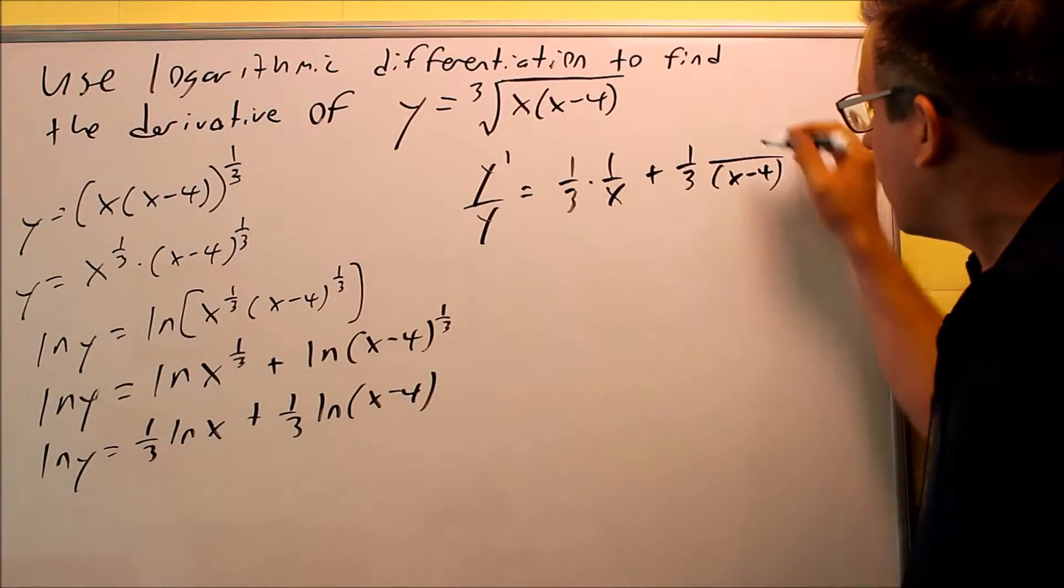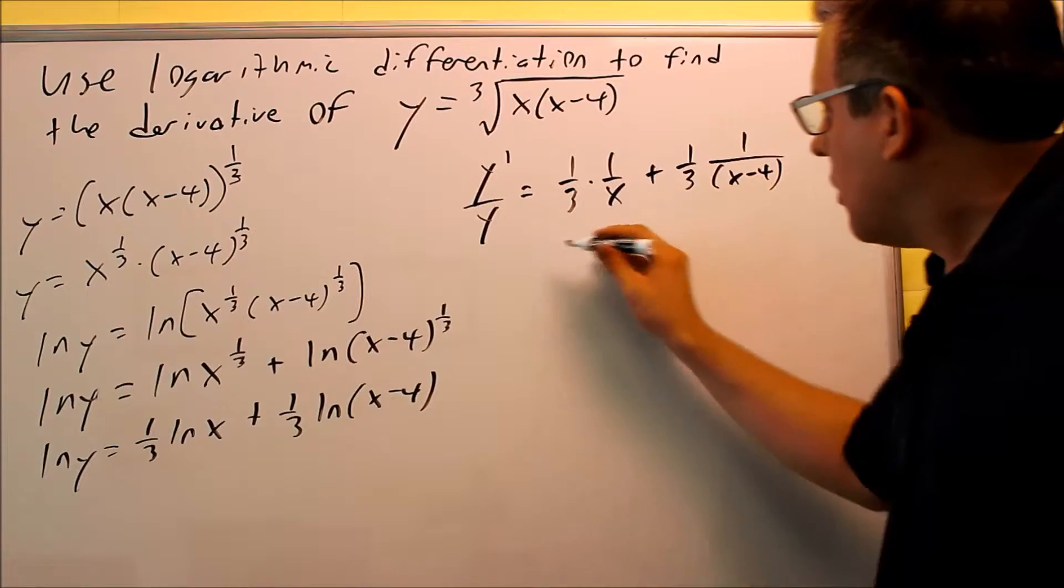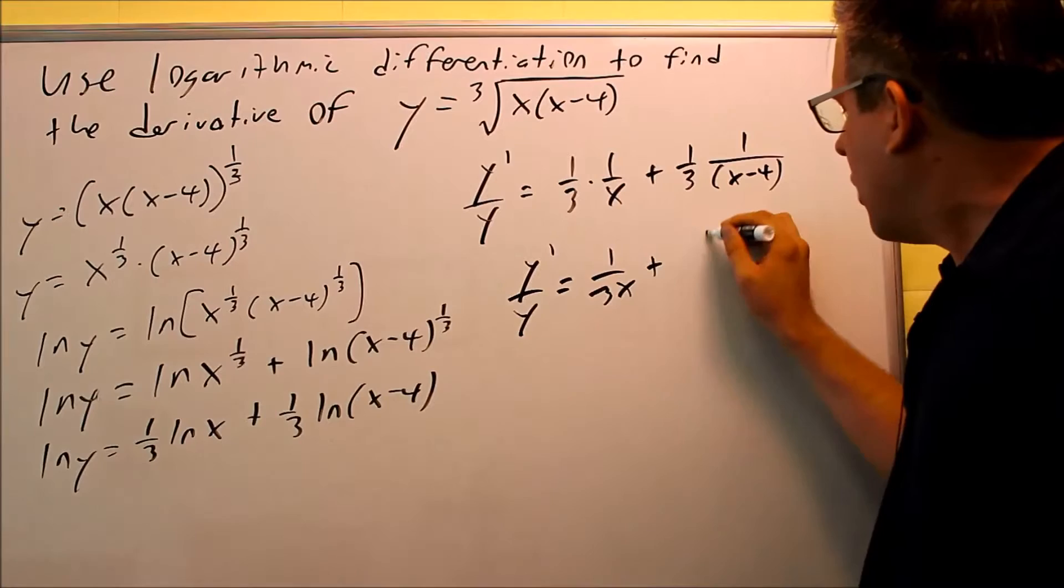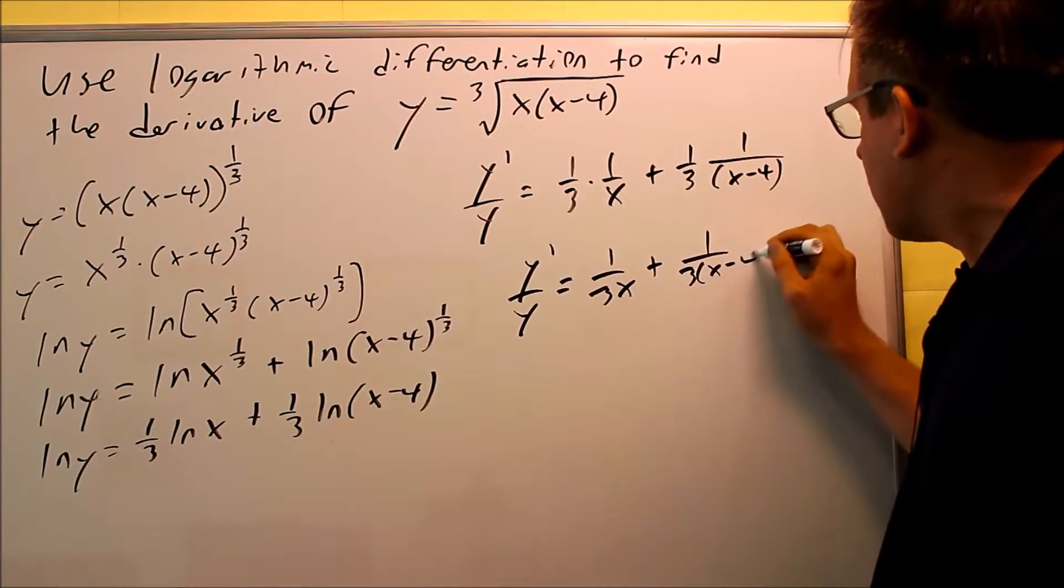So I get y prime over y equals 1 over 3x plus 1 over 3 times (x - 4).